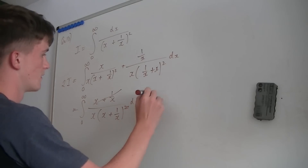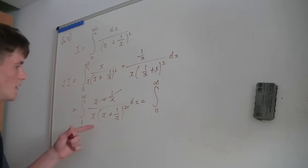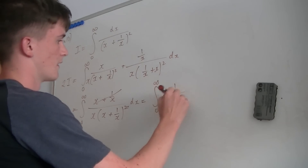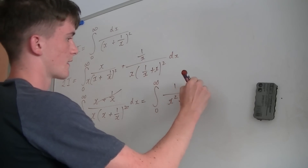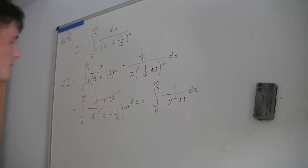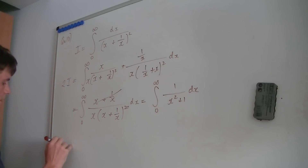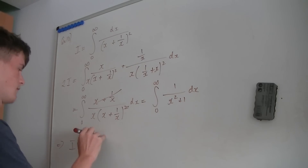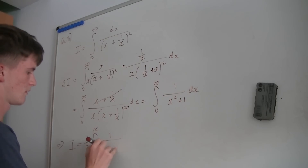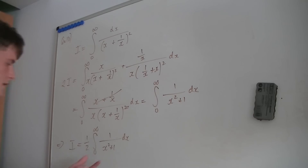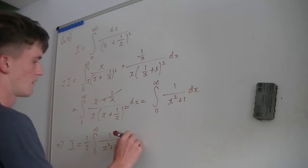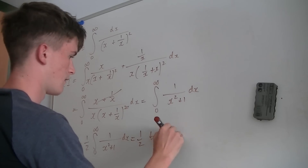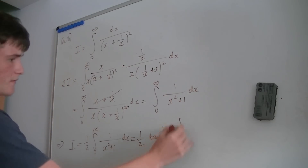This gives the integral from 0 to infinity of 1 over (x² + 1) dx, once you distribute x into the brackets. This also implies that I equals half of that integral.